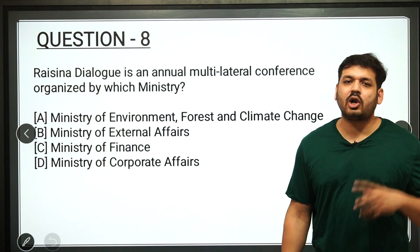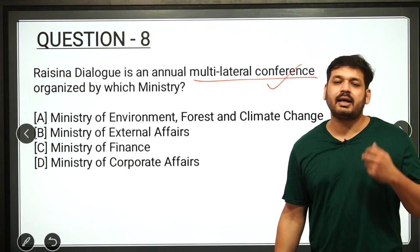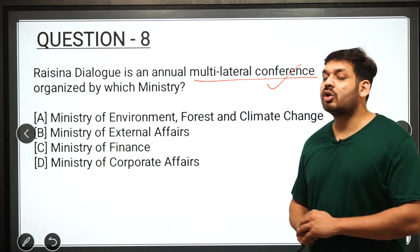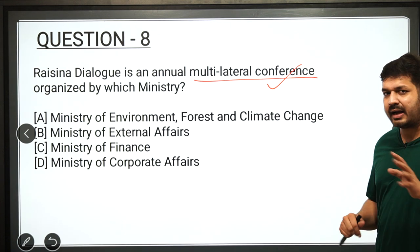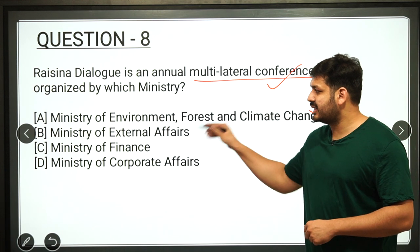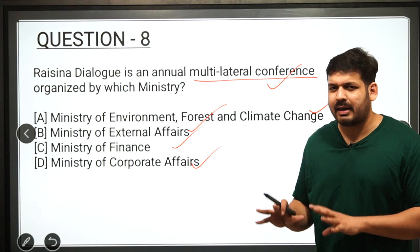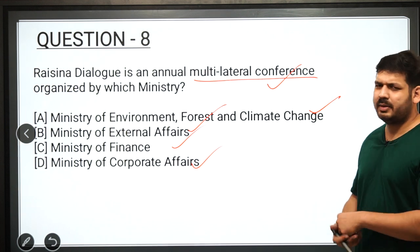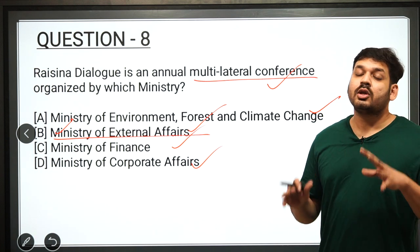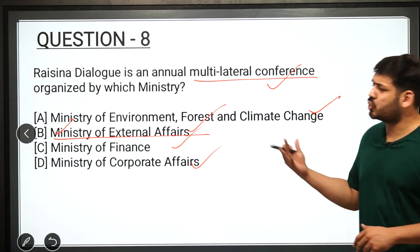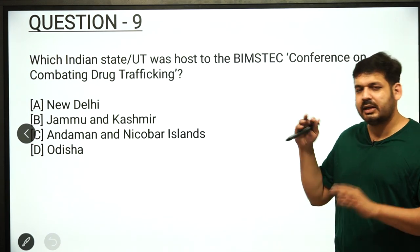Question 8 is about the Raisina Dialogue, a multilateral conference held in New Delhi. The question asks which ministry organizes the Raisina Dialogue. Options include Ministry of Environment, Finance, Ministry of Corporate Affairs. If you have studied the series, this is an easy question. The correct answer is option B — Ministry of External Affairs. If you are missing such questions, please join the course for more details.